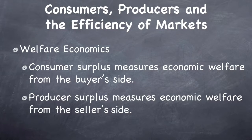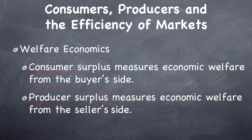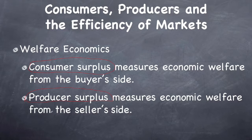There are three general measures of welfare economics. The first is consumer surplus, which measures the benefit from the point of view of the buyer. The second is producer surplus, which measures the benefit from the point of view of the seller. The third is total surplus, which is simply consumer surplus and producer surplus added together.